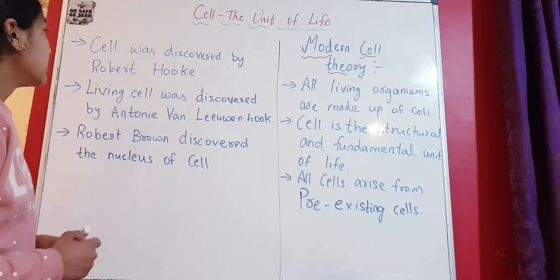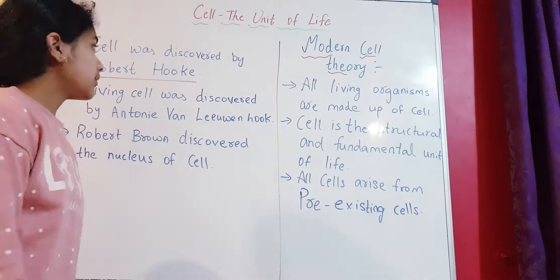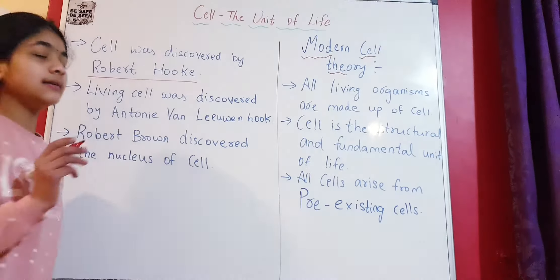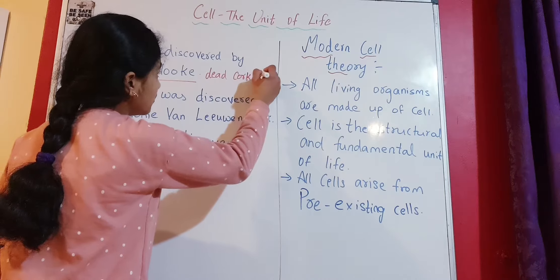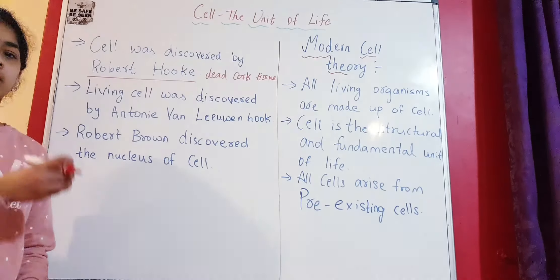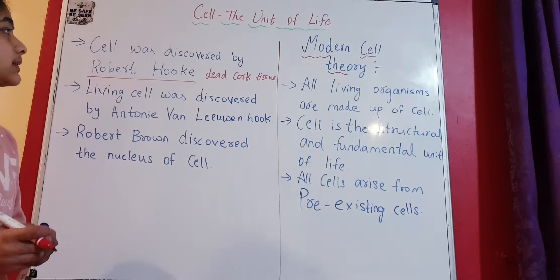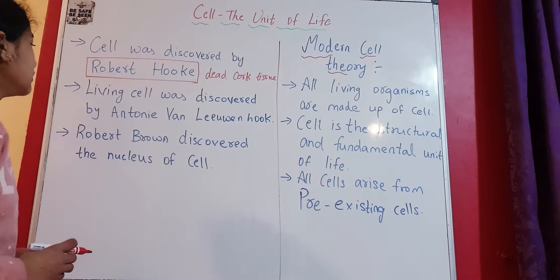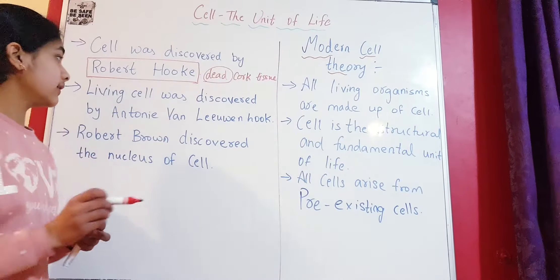The cell was discovered by a scientist called Robert Hooke. It's important to note that Robert Hooke discovered a cell in a dead cork tissue. Cork tissue is the tissue of the oak tree, or in scientific terms, Quercus suber. So this is the discovery of the cell — cell was discovered by Robert Hooke in a dead cork tissue.